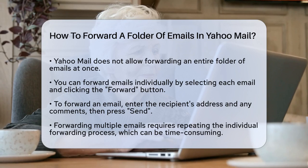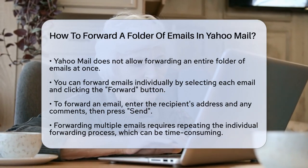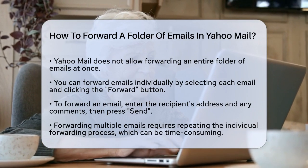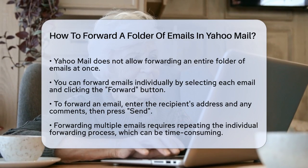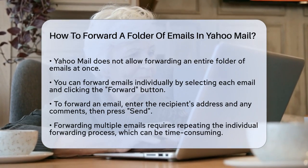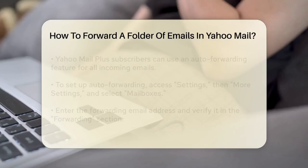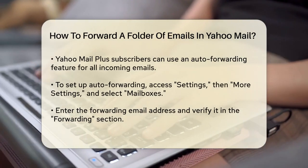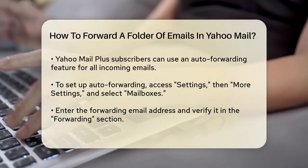Forwarding individual emails: to start, you can forward individual emails one by one. Here's how you do it. Open your Yahoo Mail inbox. Select the email you want to forward. Click the Forward button, which looks like an arrow pointing to the right. You'll find this button above the email subject line and below the body of the message. Enter the addresses you want to forward the message to, add any additional comments if needed, and press send.